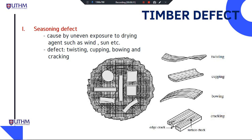Timber has defects because it is a natural material. Seasoning defects are caused by uneven exposure to drying agents such as wind, sun, and others based on the surrounding environment. Types of defect due to seasoning include twisting, cupping, bowing, and cracking. When there is a defect, it can reduce the strength of the timber.